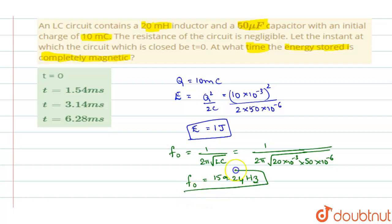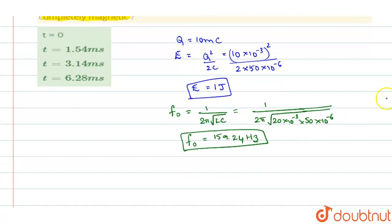So this is the frequency at which current or electric and magnetic energy keeps changing. So when this is the frequency, you can easily find out the time period using this frequency. So frequency and time period have an inverse relation. So T will be equal to 1 by F0. And so when you substitute that, you will get it as 1 over 159.24. And time period comes out to be 6.28 seconds.